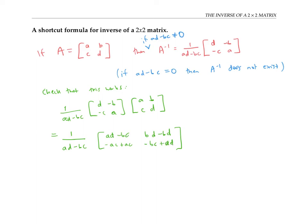We can see that this corner is zero, that corner entry zero. And when we divide these two entries by ad minus bc, we get ones, just like we want the identity matrix. So this matrix must indeed be the inverse of A.